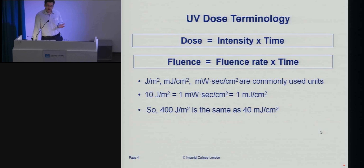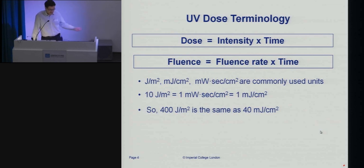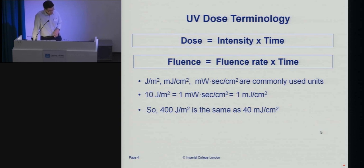Some of you may be familiar with the use of chemical disinfectants. When applying something like chlorine, you have to think about both the concentration of chlorine and the contact time with the water. A similar principle applies with UV technology, except the challenge here is that you can't easily take a water sample and measure how much UV is in the water, because you haven't added a chemical. So we talk about UV dose as being the product of the intensity of light applied to the water and the amount of time the water has been exposed to that light.